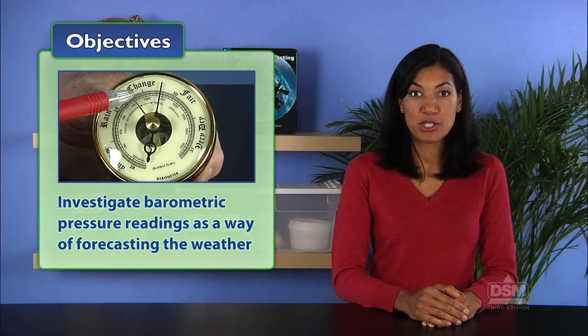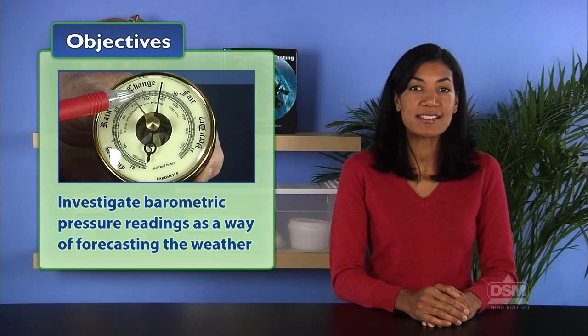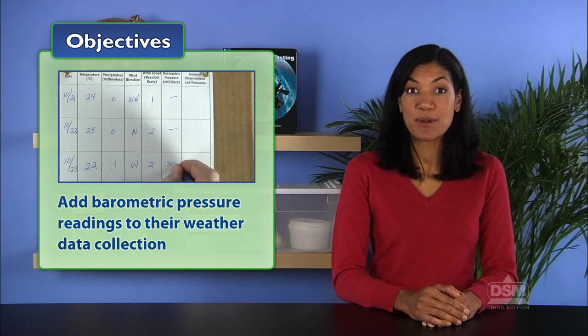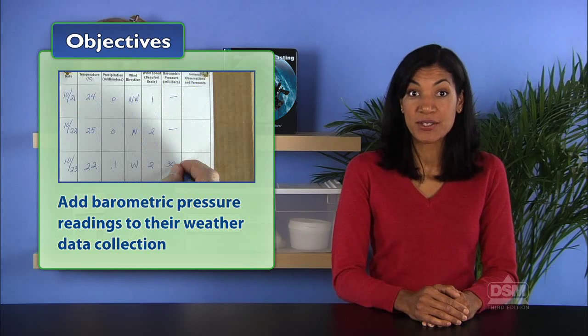In Activity 5, Forecasting with a Barometer, students learn to use a barometer to measure the air pressure in the classroom. The students first investigate barometric pressure readings as a means of forecasting the weather and then add barometric pressure readings to their weather data collection.